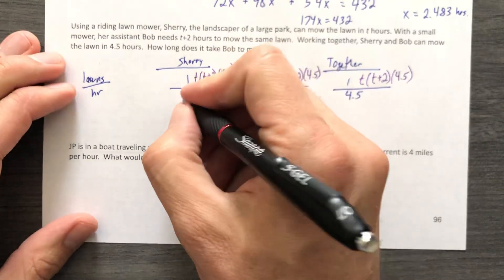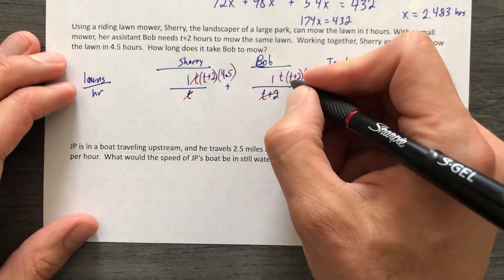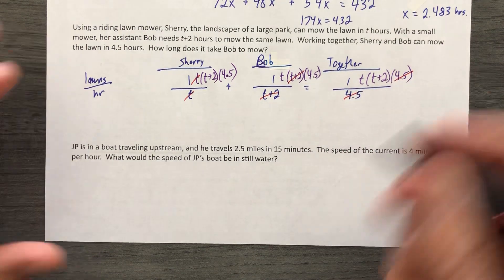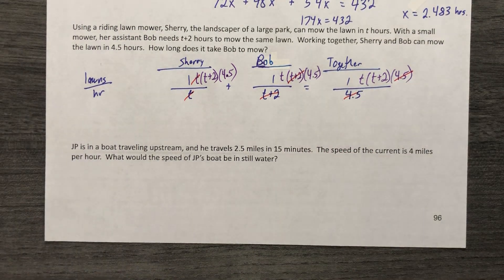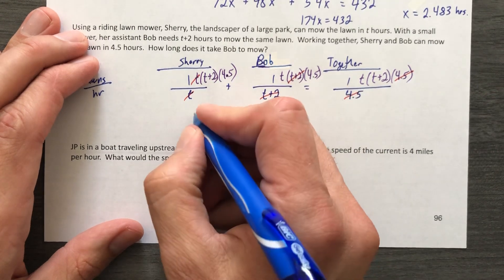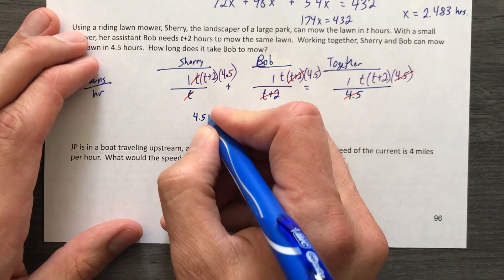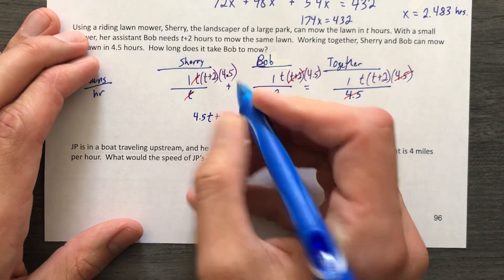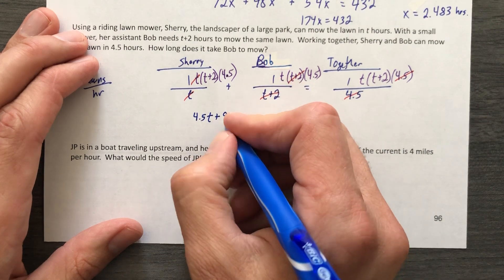Let's start canceling some stuff out. T cancels with T. T plus two cancels with T plus two, and 4.5 cancels with 4.5, which leaves us with one times T plus two times 4.5. That is 4.5T plus 4.5 times two, so nine.